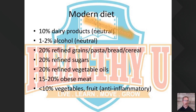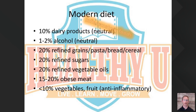Here's the current modern diet. The average American gets about 10% of their diet from dairy — I'm calling that neutral because the data is too conflicting to call it clearly inflammatory or not. About 1-2% is alcohol; a glass of wine a day can actually decrease the likelihood of inflammatory diseases. Then we get into the big problems: 20% of most Americans' diets is refined grains — pasta, breads, and cereals. These are very high on the glycemic index, meaning your body absorbs their sugars very rapidly.